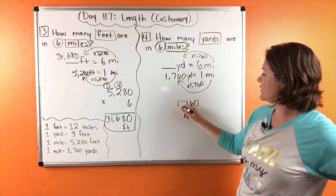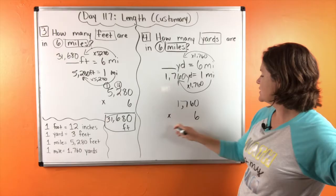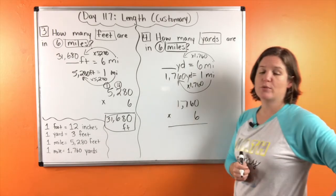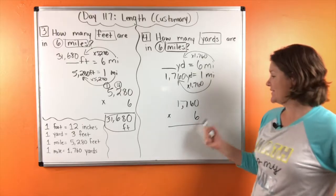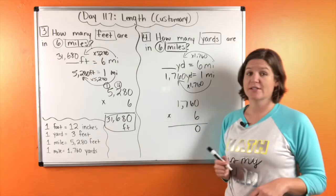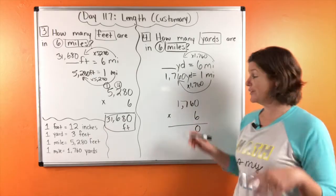So we have 1,760 times six. Pause the video if you need to catch up with me. And when you're ready, let's go. All right, we have six times zero, which is zero. Six times six is 36.